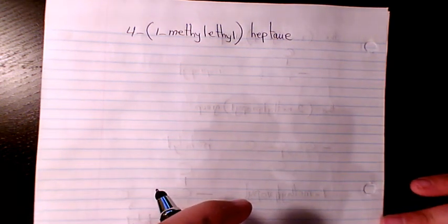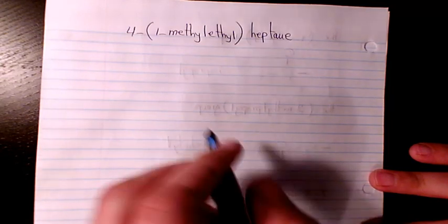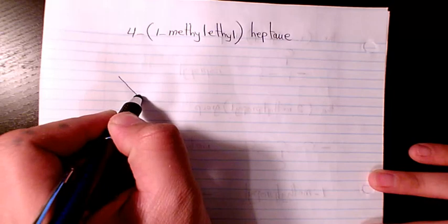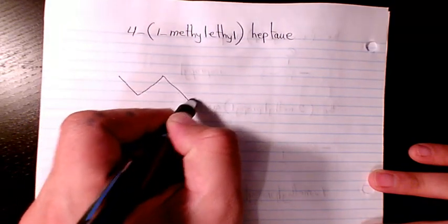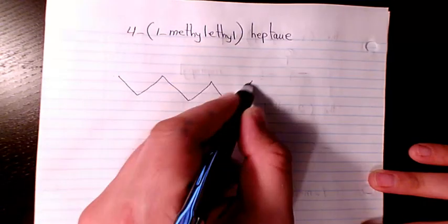In this video I want to draw this organic compound which is 4-(1-methylethyl)heptane. For heptane we have one, two, three, four, five, six, seven carbons - one, two, three, four, five, six, seven.